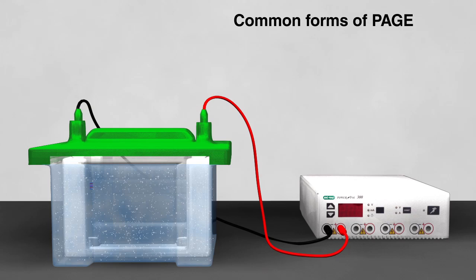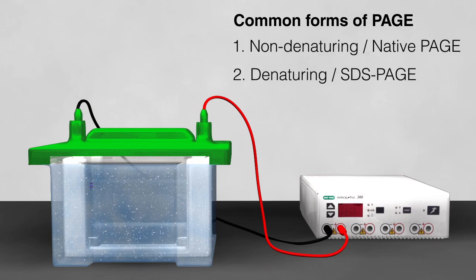Several forms of polyacrylamide gel electrophoresis, or PAGE, exist. The two most commonly used are non-denaturing or native PAGE, and denaturing or SDS PAGE.